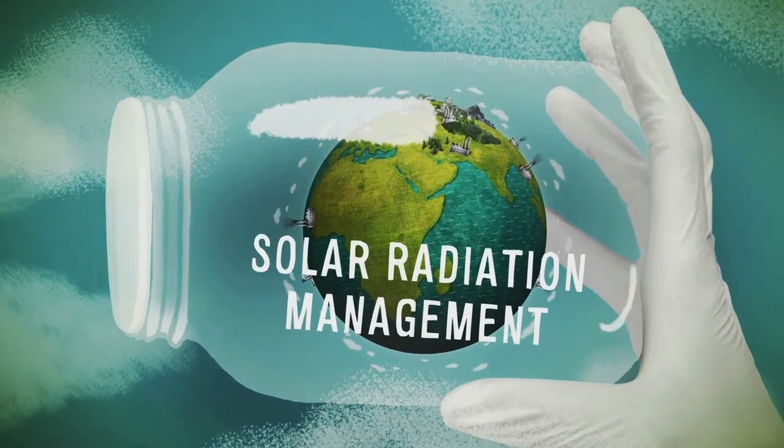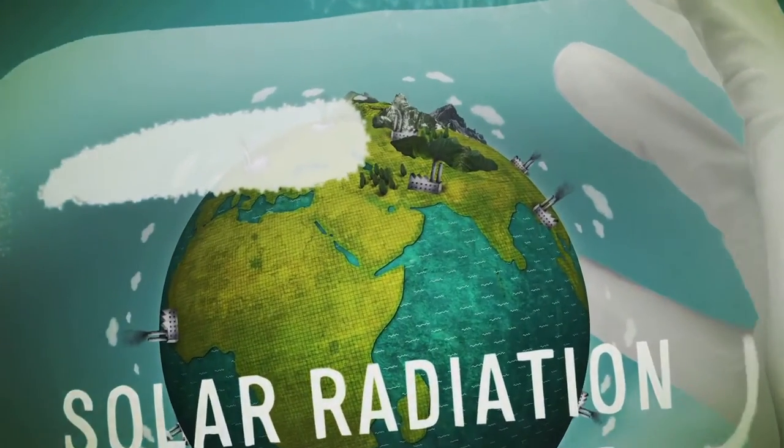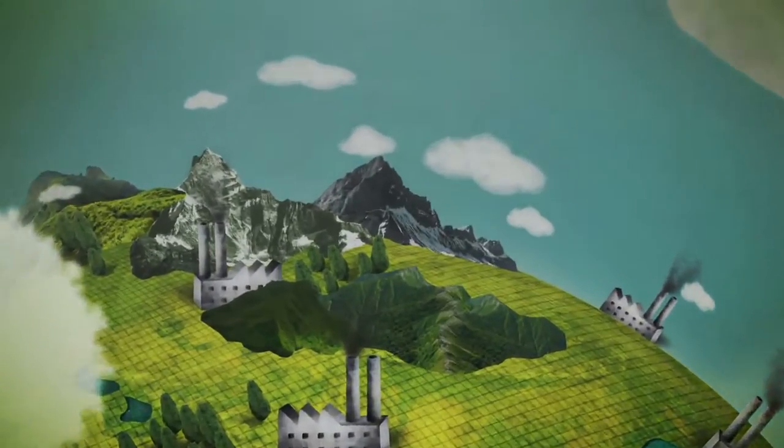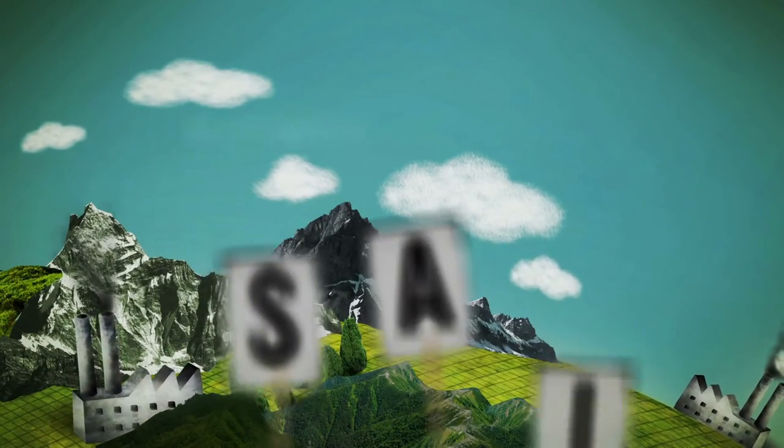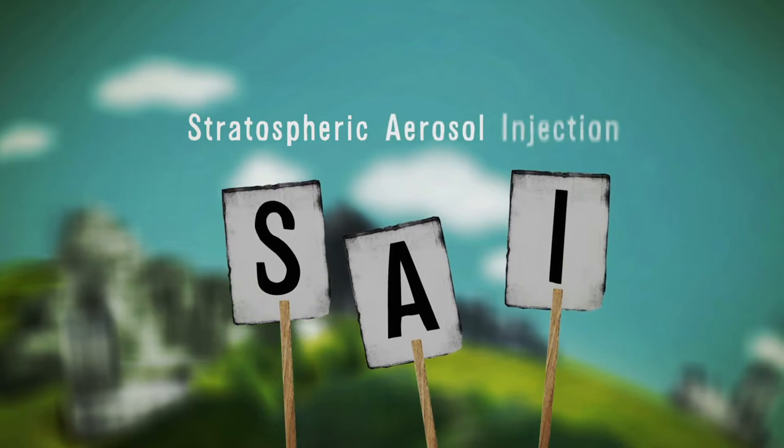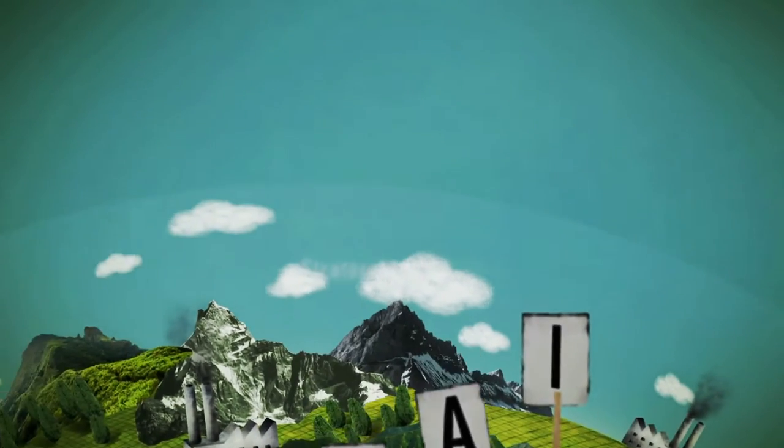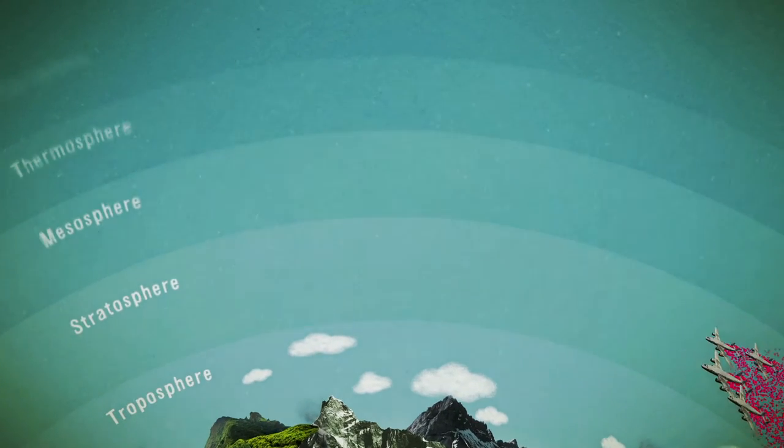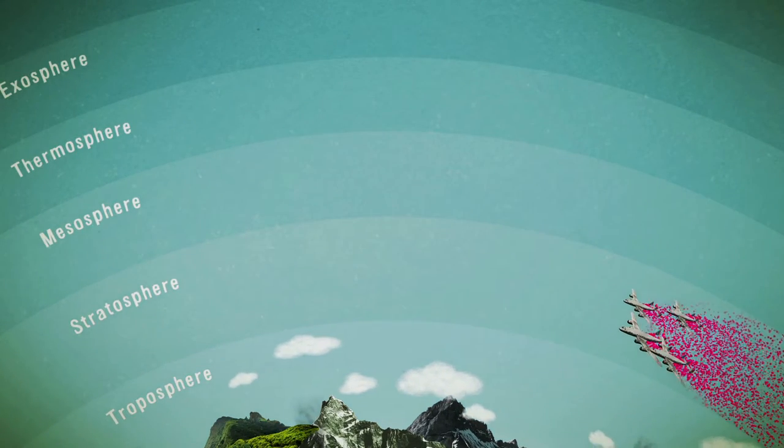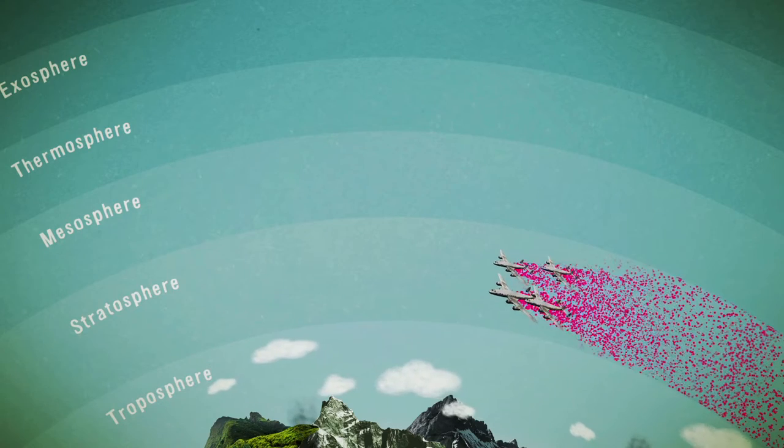Regarding solar radiation management, one technology in particular is the subject of research, so-called stratospheric aerosol injection. This might, for example, involve large numbers of aircraft scattering large quantities of particles, such as sulfur dioxide, into one specific layer of the atmosphere, namely the stratosphere.